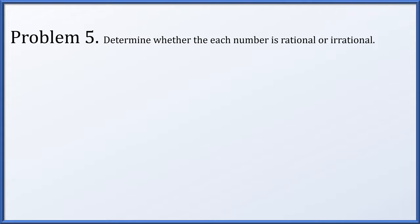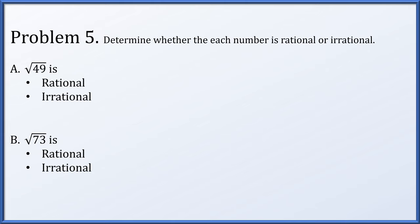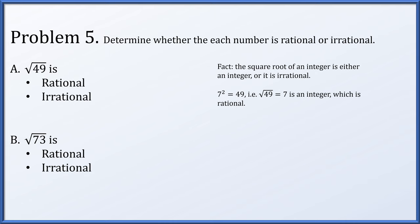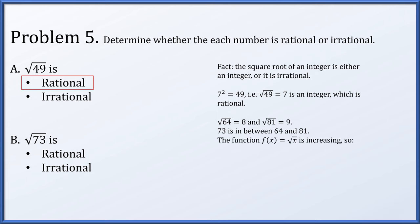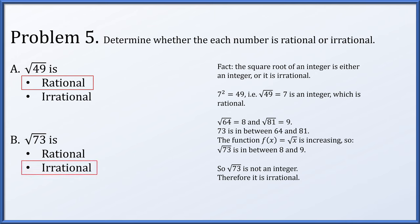Problem 5. We're given some numbers and must determine whether each is rational or irrational: the square root of 49 and the square root of 73. A useful fact: when you take the square root of an integer, either you get another integer or the result is definitely irrational. Since 7 squared is 49, the square root of 49 is 7 — an integer, which is rational. The square root of 64 is 8 and the square root of 81 is 9, and 73 is between them. Since the square root function is increasing, the square root of 73 falls between 8 and 9, so it is not an integer, and therefore it must be irrational.